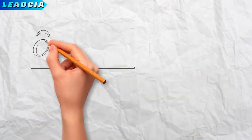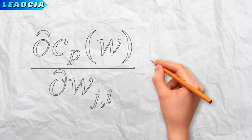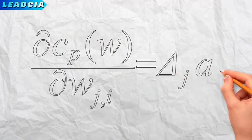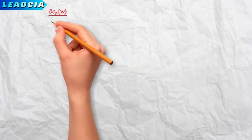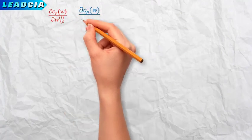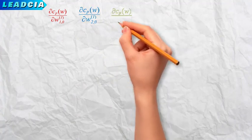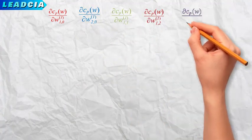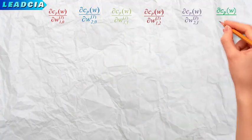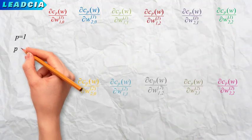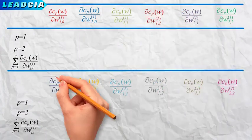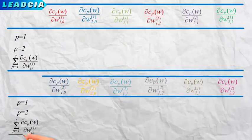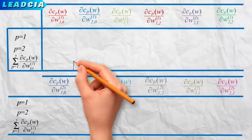Knowing all the deltas and all the a's, we can calculate the stochastic gradients of the cost function with respect to all the omegas in the network. To record the values of these stochastic gradients, we will draw up a new table. On the first row we note the gradients of the first example, on the second the gradients of the second example, and so on.